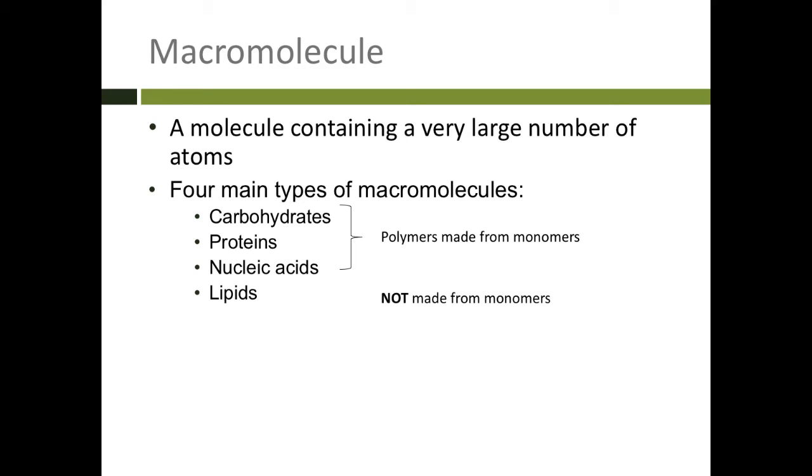Welcome back everybody. In the last video we talked about chemistry, electrons, protons, and atoms - all very small things. Today we're going to be talking about macromolecules. A macromolecule has lots and lots of atoms in it, and there are four main types of macromolecules.